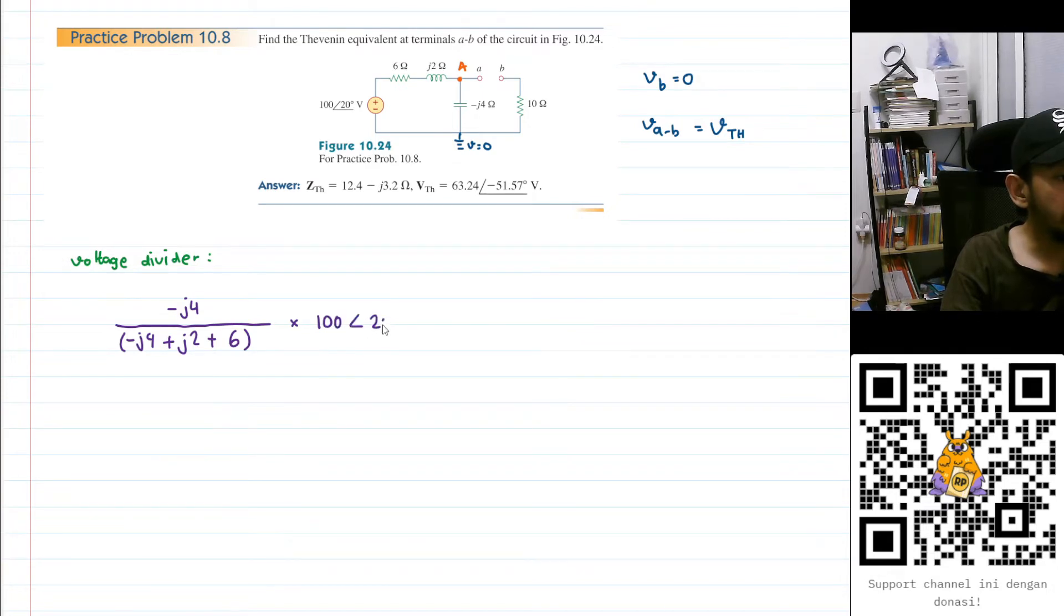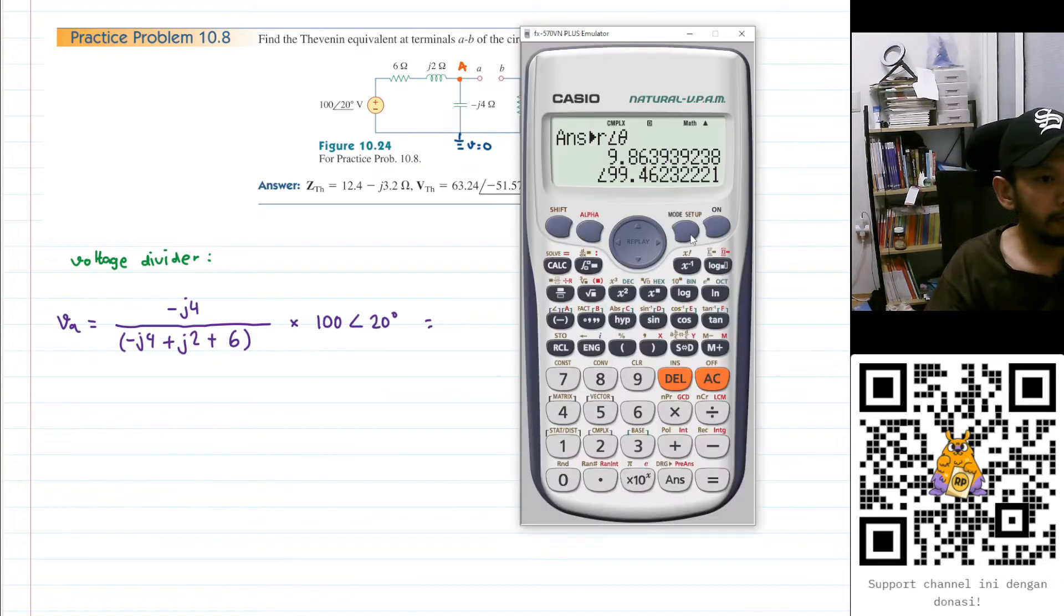And all of them need to be multiplied by this one, so I'll have 100 angle 20 degrees. Let's just put it into calculator. I'll have this calculator set up as a complex number calculator. I'll have minus 4i divided by minus 4i plus 2i plus 6, and then multiply by 100 angle 20.